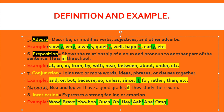Number seven, conjunction — joins two or more words, ideas, phrases, and clauses together. Examples include: and, or, but, because, unless, since, for, rather than. Example sentence: Narirat and Leo will have good grades if they study their exam.